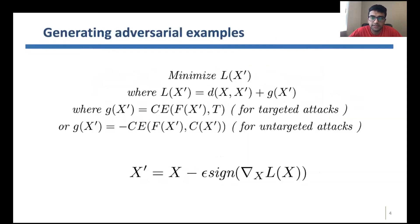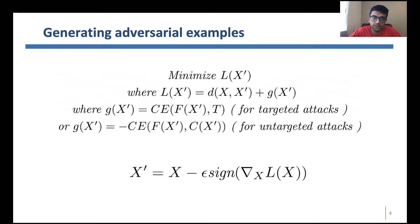The way these attacks are performed is that the attacker defines an attack objective to minimize the distance between the adversarial example and the original input under distance metric d, while also causing an error in the prediction — either making the output closer to a target class or farther from the original prediction. Since everything is differentiable in neural networks, we obtain the gradient of this objective with respect to the input and move the input in the direction of the gradient to construct the adversarial example.